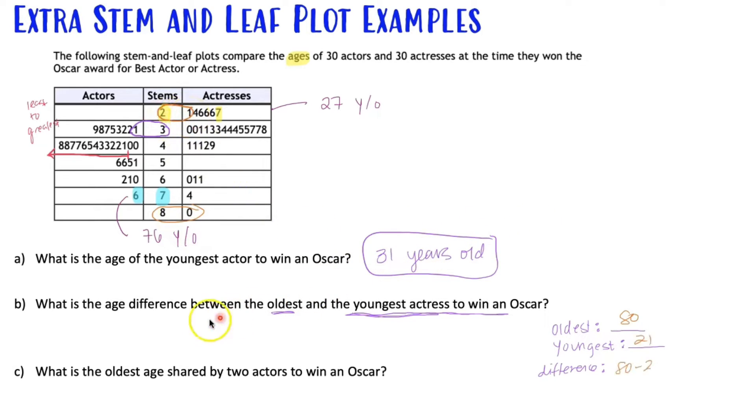So if we subtract the two, that gives us the answer of difference. Difference means subtraction, everybody. So 80 minus 21. The difference between that would be 59 years old.